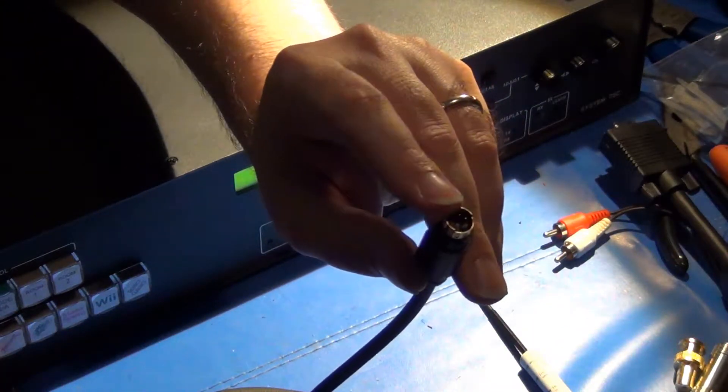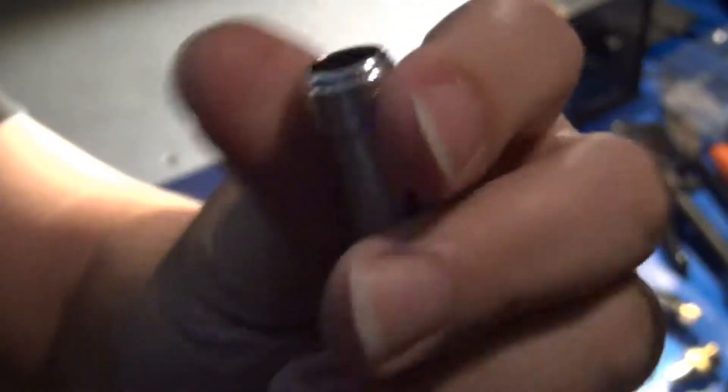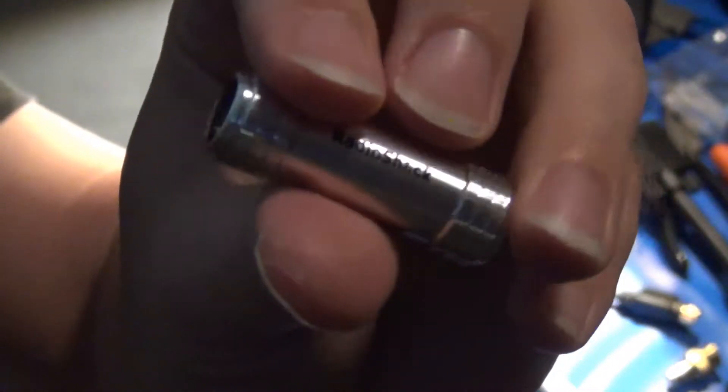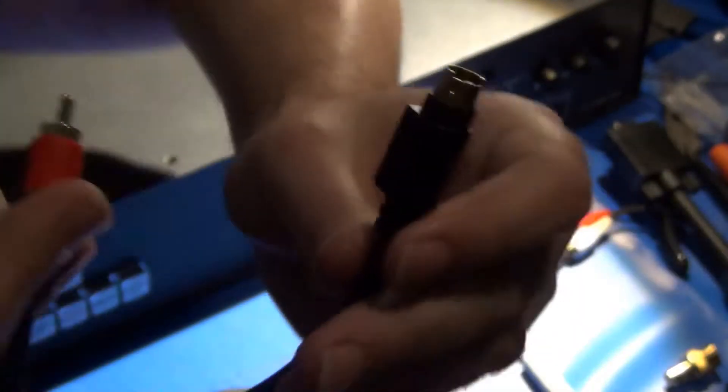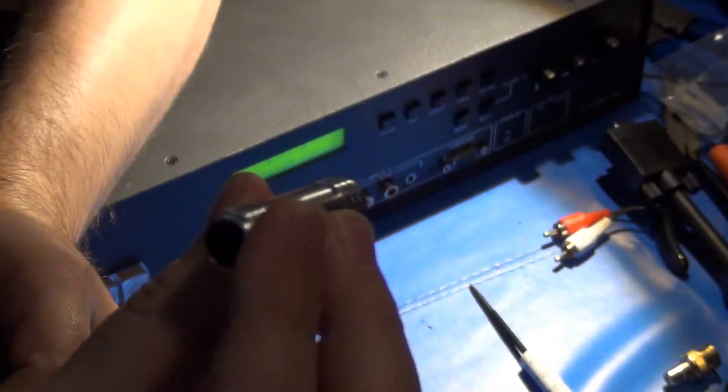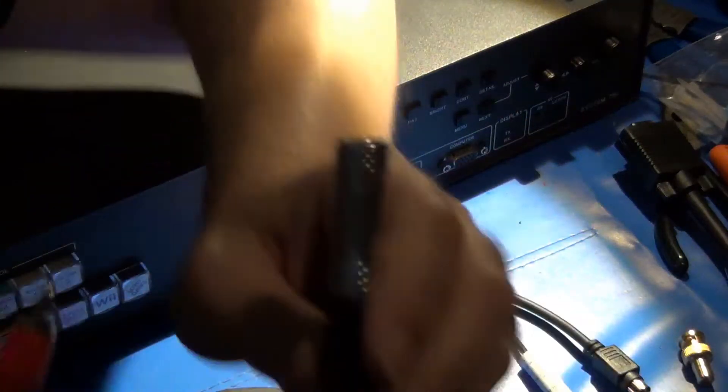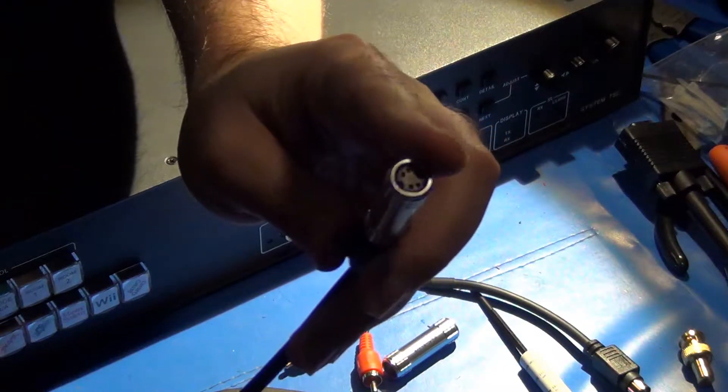It has a male connection on the end and I really needed it to be female. So my solution is this S-video coupler, specifically a female to female coupler, or in simpler terms, an S-video gender changer. Using this cable in conjunction with the coupler, I end up with the same thing that I had before, only now I have the required female connection point.